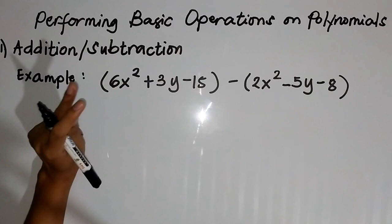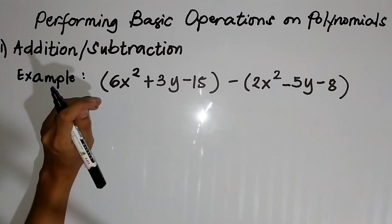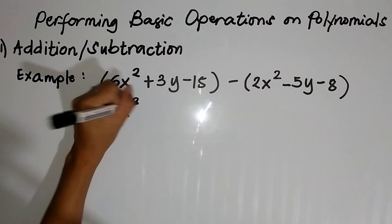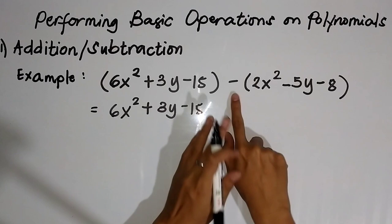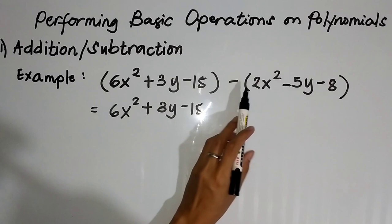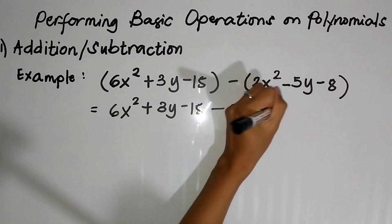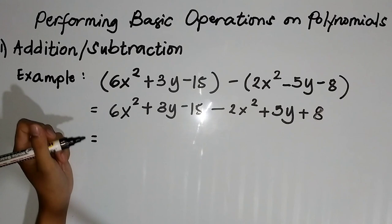Again, gagamitin natin yung three steps na ginamit natin doon sa addition. Una, see if the polynomials are in standard form — in our case naka-standard form naman sya. Then we will use the distributive property, and then combining like terms. Copy muna natin yung first set of polynomial: 6x squared plus 3y minus 15. Now gamitin na natin yung distributive property — we have negative, distribute natin yung negative sign sa subtracting polynomial: negative times 2x squared, that would be negative 2x squared. Negative times negative is positive 5y. Negative times negative again is positive 8.